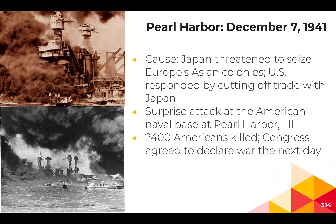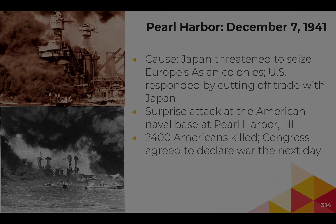What led to the attacks on Pearl Harbor, which ultimately brought the United States into World War II? Japan was threatening to seize European Asian colonies. In response, FDR cut off trade with Japan, and most notably issued an oil embargo and blockade against Japan — very effective given that about 90% of Japan's oil was imported. The United States also demanded that Japan withdraw from China. Ultimately, a combination of this oil embargo and the demands placed on Japan led to a surprise attack on the naval base at Pearl Harbor on the island of Oahu on December 7th, 1941. The very next day, the United States declared war on Japan, and then a few days later on December 11th, they also declared war on Germany and Italy.